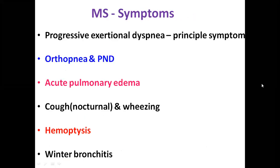The first thing to happen in mitral stenosis is increase in left atrial pressure, leading to pulmonary venous hypertension and congestion. The most important symptom is progressive exertional dyspnea, which progresses gradually over months to years. As severity increases, patients may have orthopnea and PND, or may present with acute pulmonary edema, especially with precipitating factors. They may also have nocturnal cough. Hemoptysis is an important symptom in this valvular lesion, not seen in other valvular lesions. Winter bronchitis can occur in a small percentage.